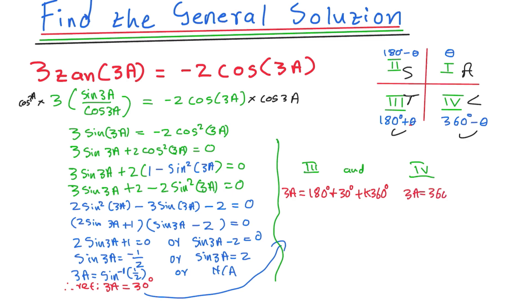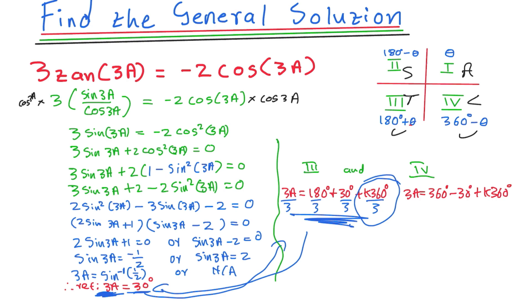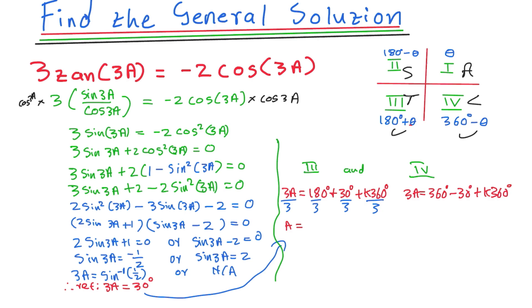For the third quadrant: 3a = 180° + 30° + k·360°. For the fourth quadrant: 3a = 360° - 30° + k·360°. Now divide all terms by 3. Third quadrant: 180 + 30 = 210, and 210 ÷ 3 = 70°. So a = 70° + k·120°.